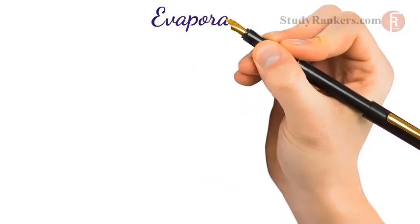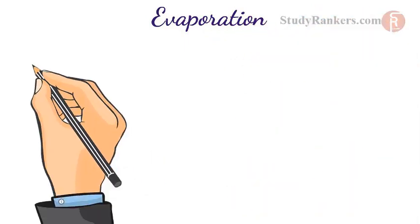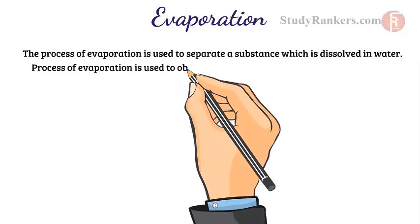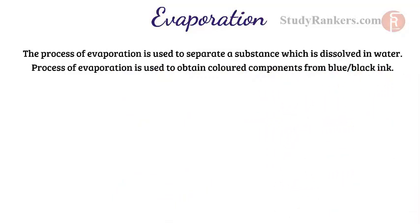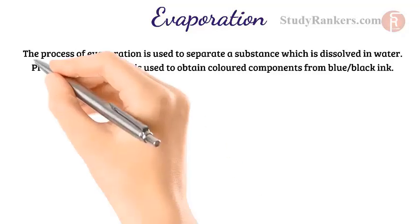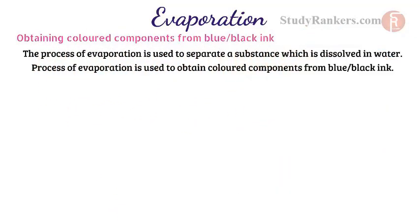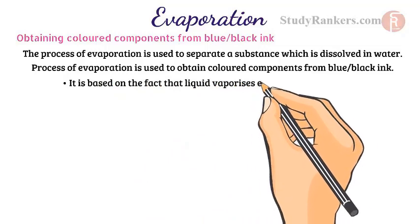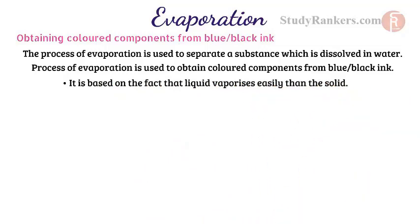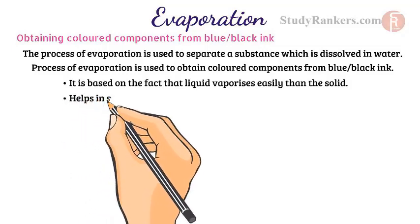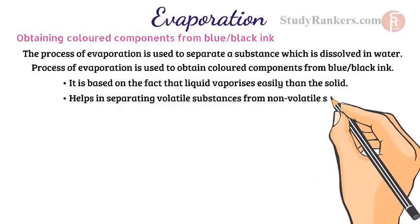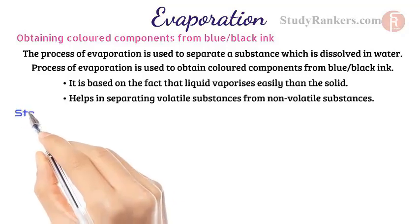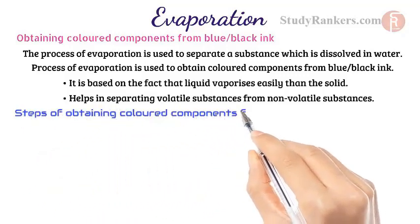Let's start with evaporation. The process of evaporation is used to separate a substance which is dissolved in water. We will see this process by obtaining colored components from blue-black ink. This process is based on the fact that liquid vaporizes more easily than solid, helping in separating volatile substances from non-volatile substances.